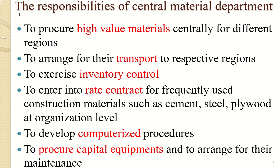Moving to the responsibilities of the central material department: the first responsibility is to procure high value materials centrally for different regions and arrange for their transport to respective regions. They also exercise inventory control — that is, control the stock — and enter into rate contracts for frequently used construction materials such as cement, steel, and plywood at the organization level.